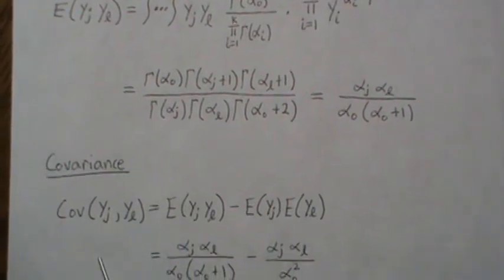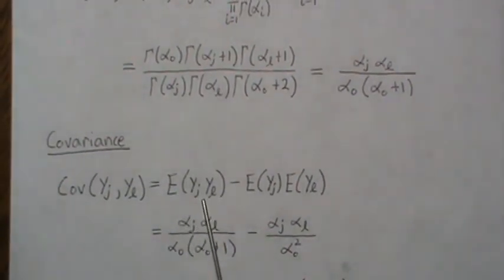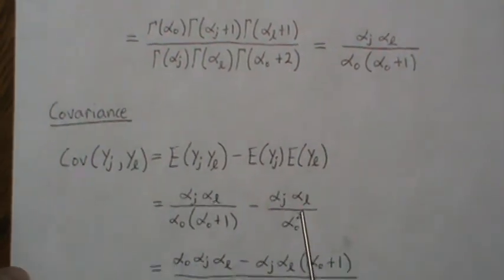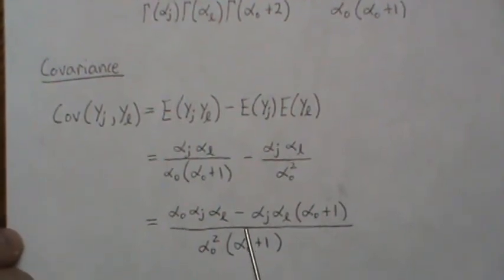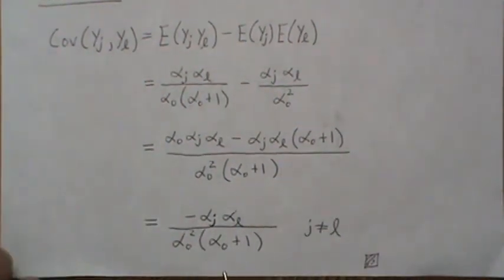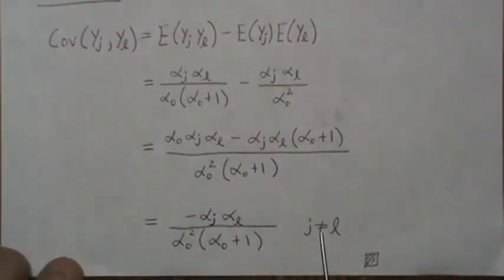But now we use that in the covariance. The covariance is the expected value of this product minus the means. We plug in what we know, and then the means is this product. We get a like denominator and simplify, cancel, and that's it. So this is the covariance of a Dirichlet distribution, and it's negatively correlated, which is what we expect.